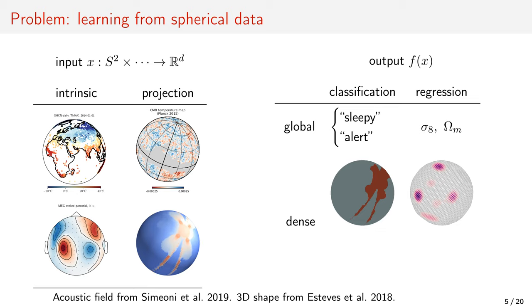This is of highly practical relevance because the Earth resembles a sphere, and a point observer in Euclidean space sees data projected to a sphere. Tasks of interest include global or dense classification and regression.